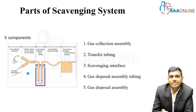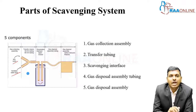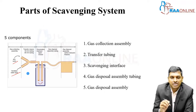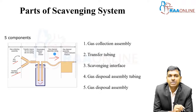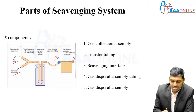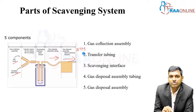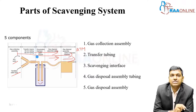The scavenging interface can be open or closed. From the interface, the scavenged gases travel through the disposal assembly tubing into the gas disposal assembly. The gas disposal assembly can be an active or passive system. Active systems have a vacuum through which gases are sucked out of the scavenging system into the atmosphere.